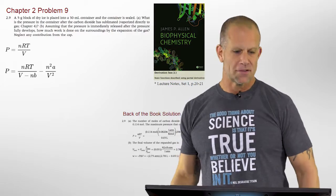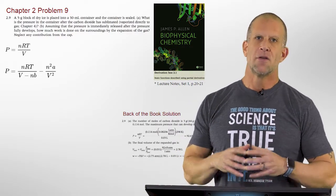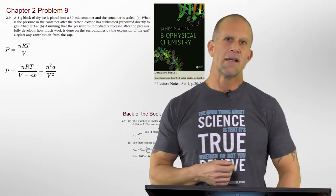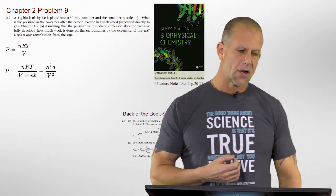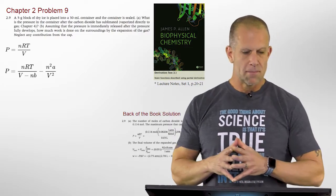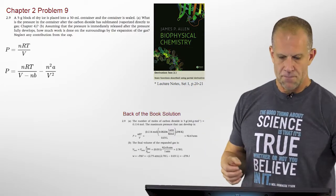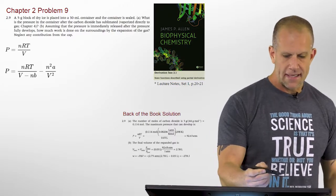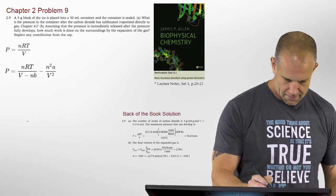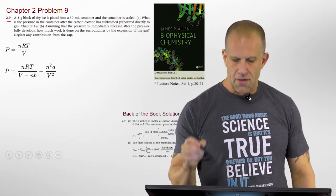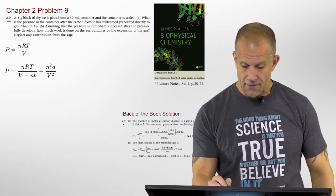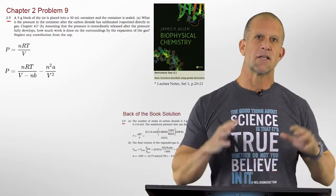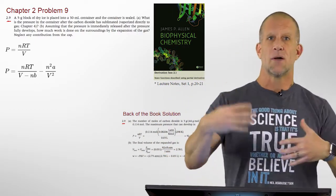Hey BCH 341 students, I'm Professor Jeff Yarger. I want to spend some time going through an example problem, one that is directly out of your homework and comes out of the primary book we've been using for the spring 2018 course, which is Biophysical Chemistry by James Allen. In chapter 2, he goes through problem number 9. I've given the exact problem that is in the book here, along with the solution from the back of the book. What I'm here to do in this screencast is walk you through some of the nuances to make sure we fully understand it at both a conceptual and working-problem level.